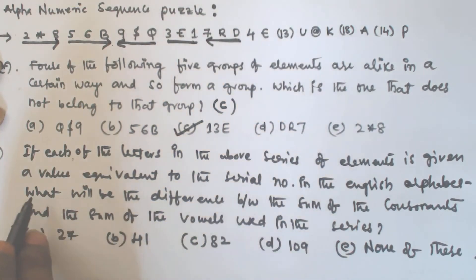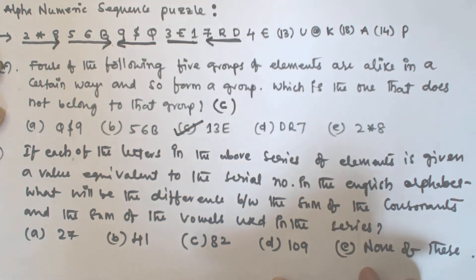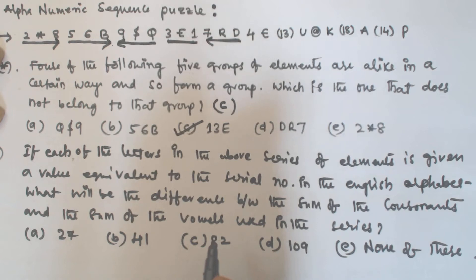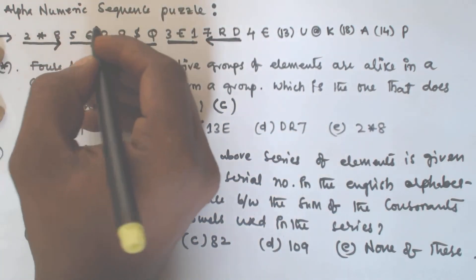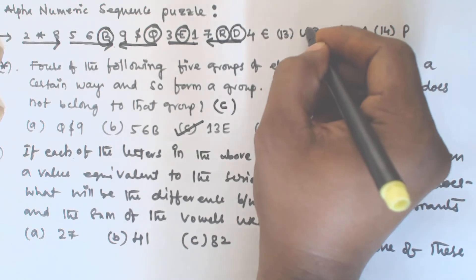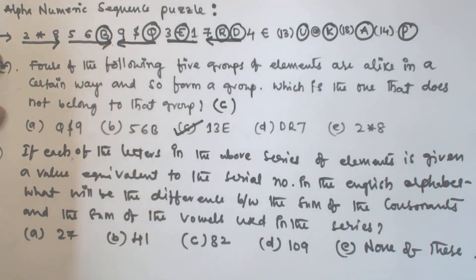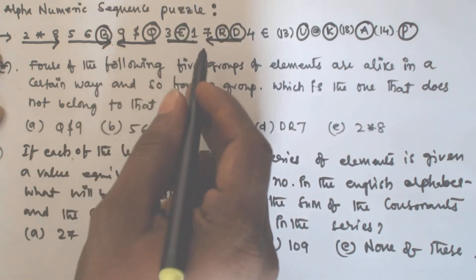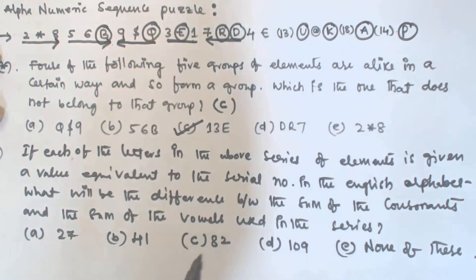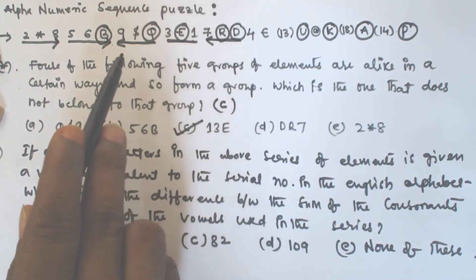For the second question: each of the letters in the above series is given a value equivalent to the serial number in the English alphabet, so A is 1 and Z is 26. Assigning values for each alphabet in the given series: B, Q, E, R, D, U, K, A, and P. We give the corresponding values — B is 2, E is 5, R is 18, A is 1.